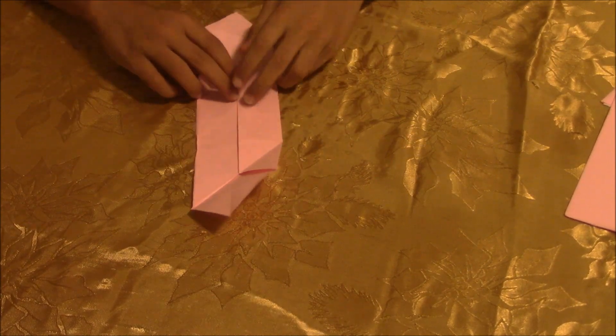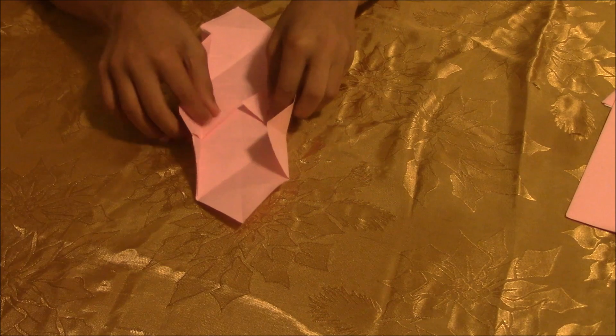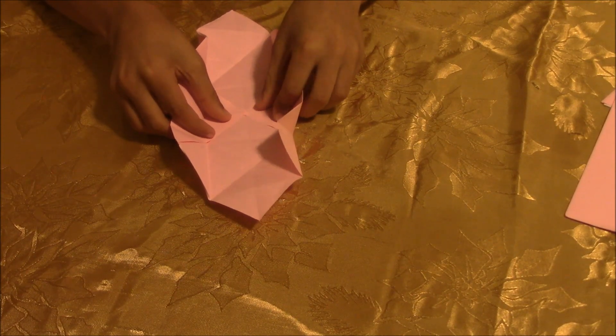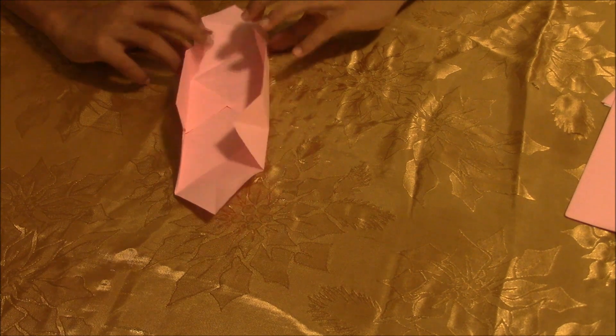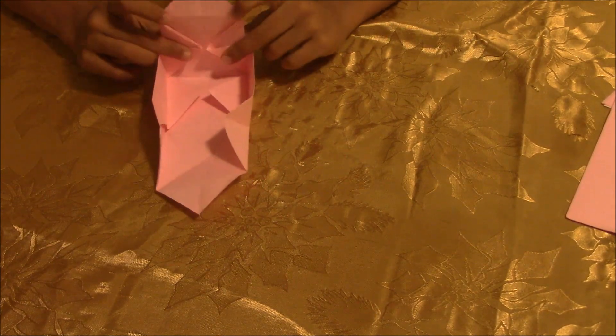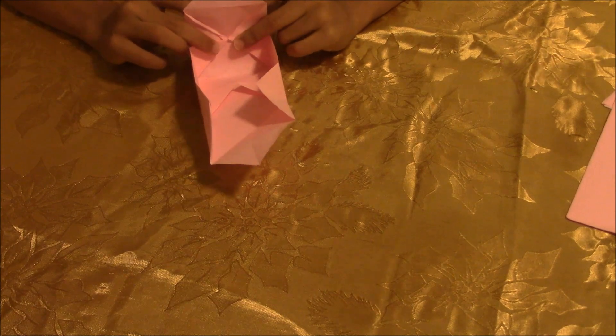Now this probably gets tricky. So you're going to open it up and put the triangles, those two extra triangles down. And now you're going to get the top end of the paper and fold it upwards. And it will be folding and fold it down.